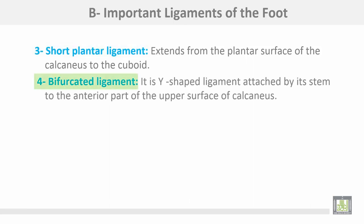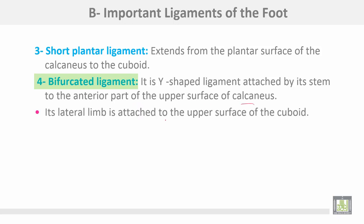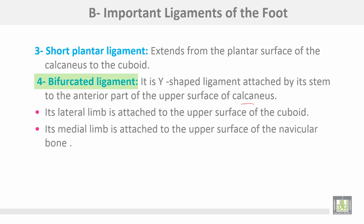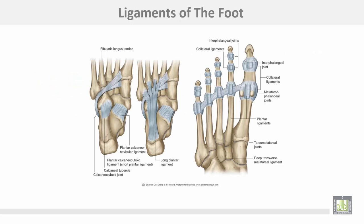The fourth ligament is the bifurcate ligament. It is a Y-shaped ligament attached by its stem to the anterior part of the upper surface of the calcaneus. Its lateral limb is attached to the upper surface of the cuboid bone. Its medial limb is attached to the upper surface of the navicular bone. Shown here are the long plantar ligament and the short plantar ligament.